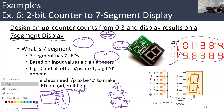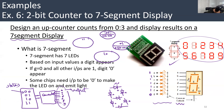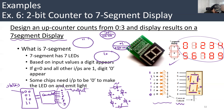For digit two: segments A, B, G, E, D are lit. So all of them are ones except F and C. So A=1, B=1, C=0, D=1, E=1, F=0, G=1.